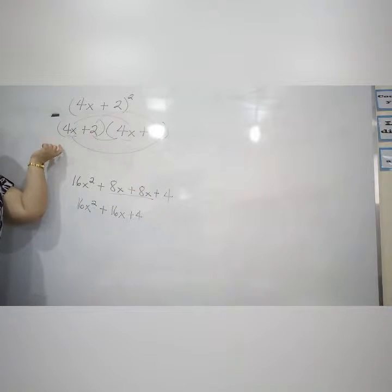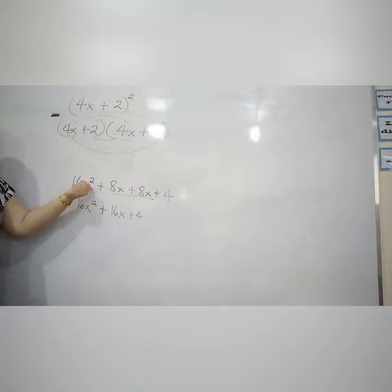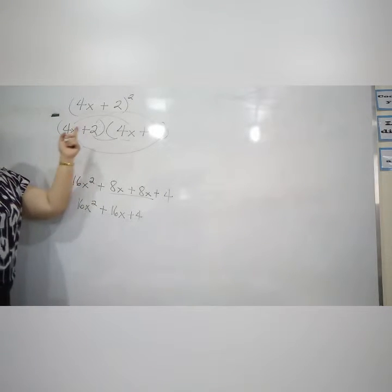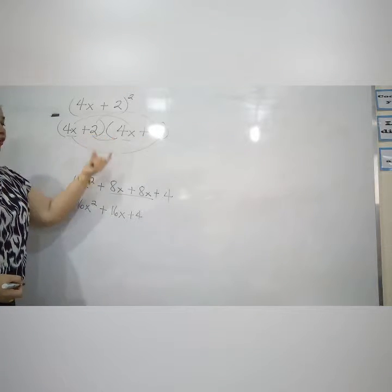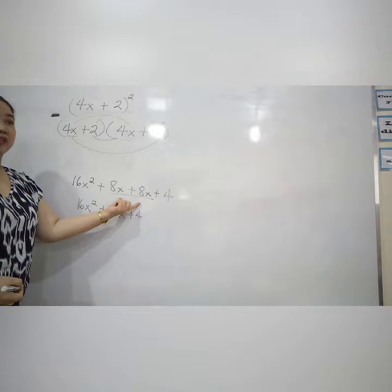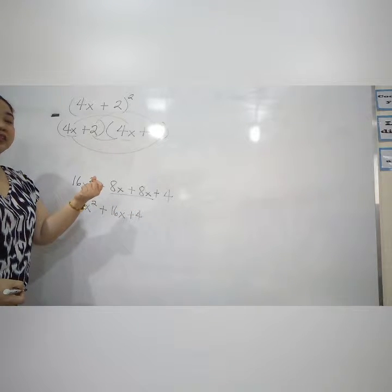When you add, the exponent doesn't get added, only in multiplication. Sometimes you forget that the first term is squared, but when it comes to the middle term, no, because that's just addition. Okay?